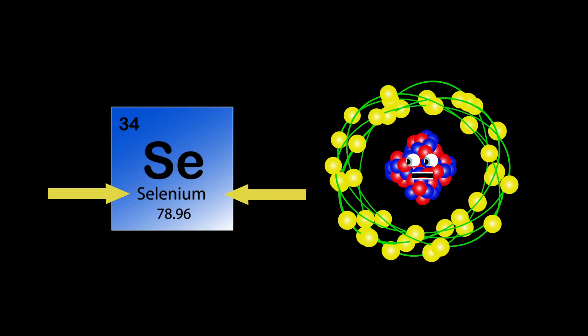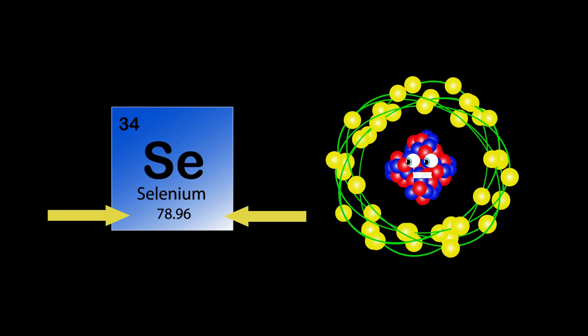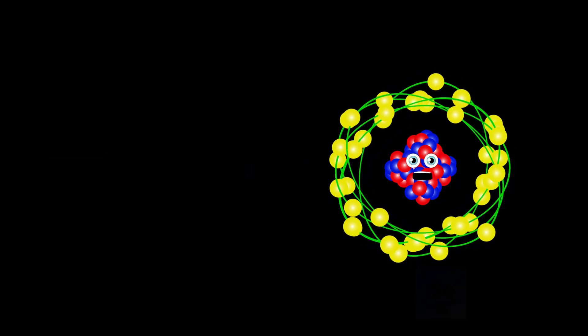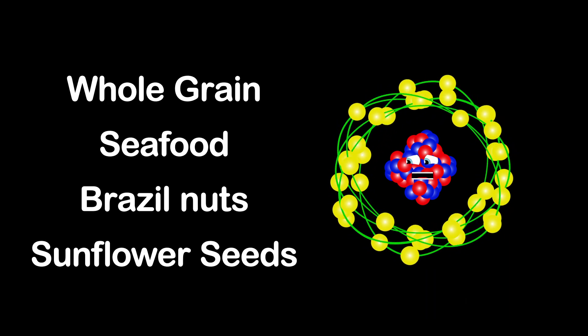My name is selenium. My atomic number's 34. My atomic mass is 78.96. Symbol's Se. This is where it's seen. I'm found in soil and I occur naturally in whole grains, seafood, brazil nuts, and sunflower seeds.